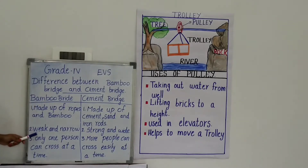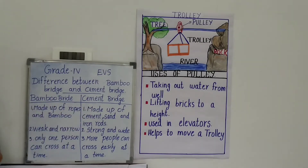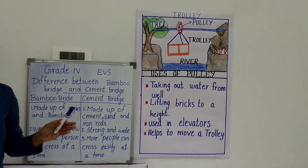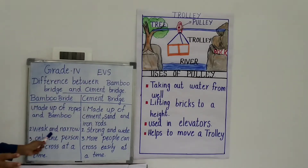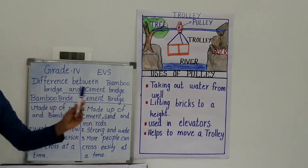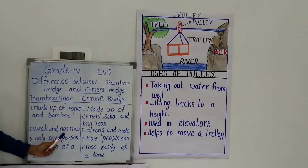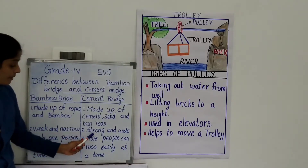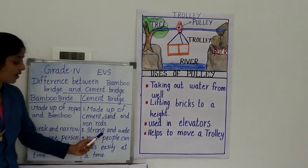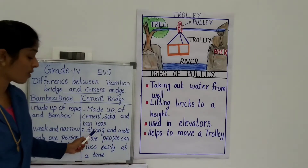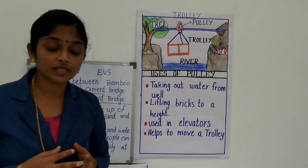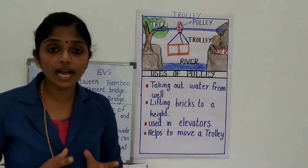The next difference: bamboo bridge is weaker and narrower than cement bridge. Bamboo bridge is very narrow and not wide, and it is very weak — not as strong as a cement bridge. A cement bridge, on the other hand, is very strong and wide.